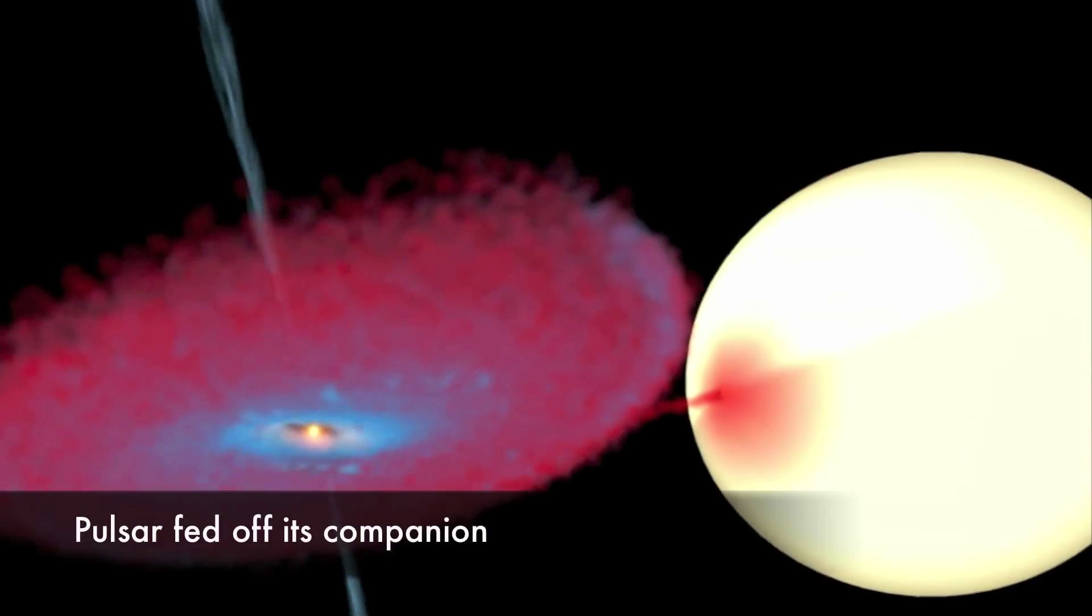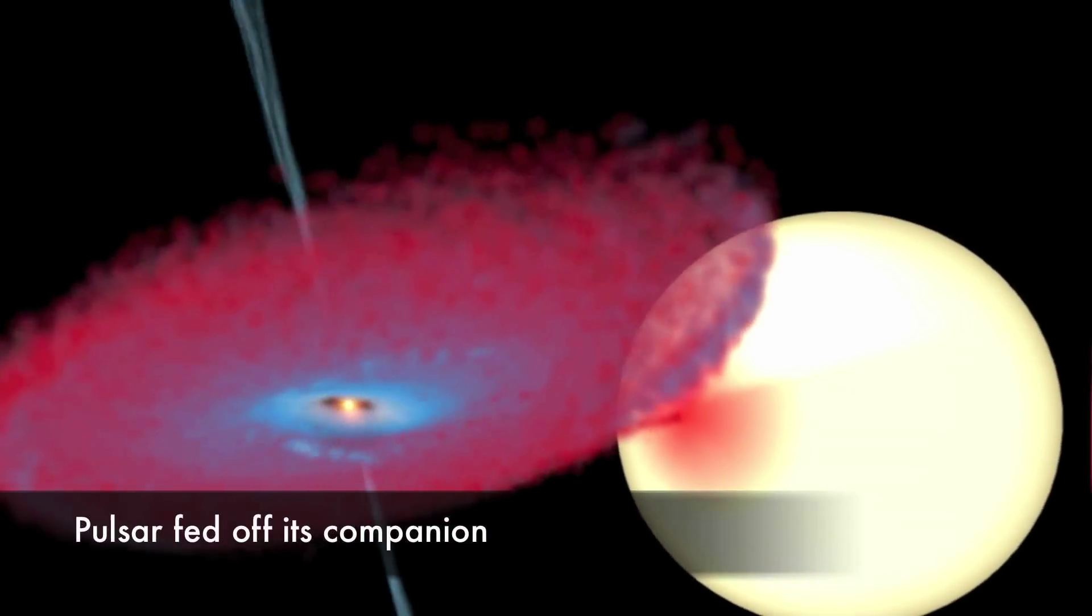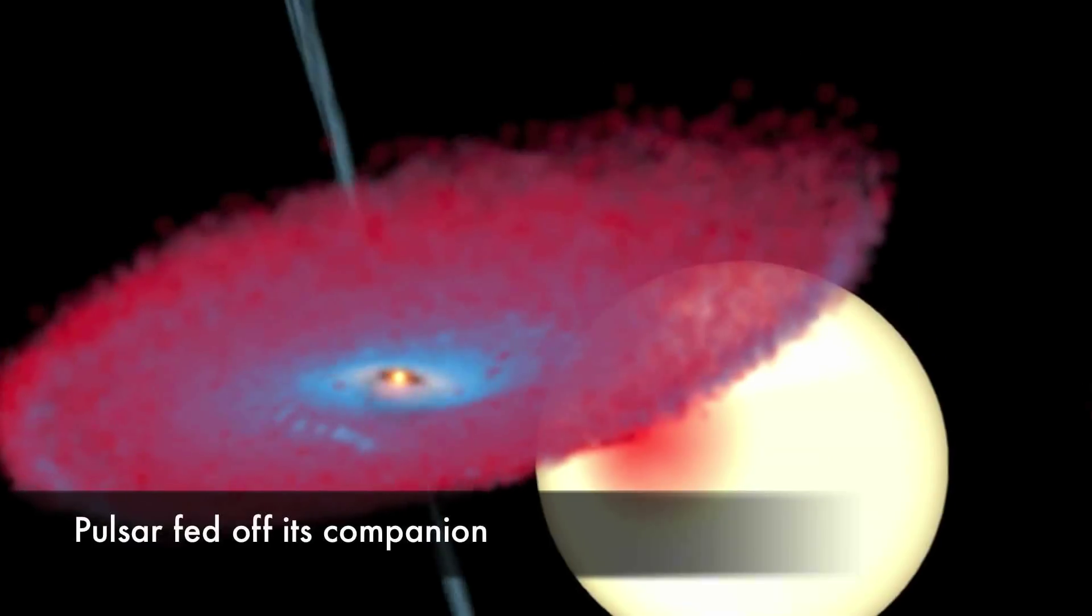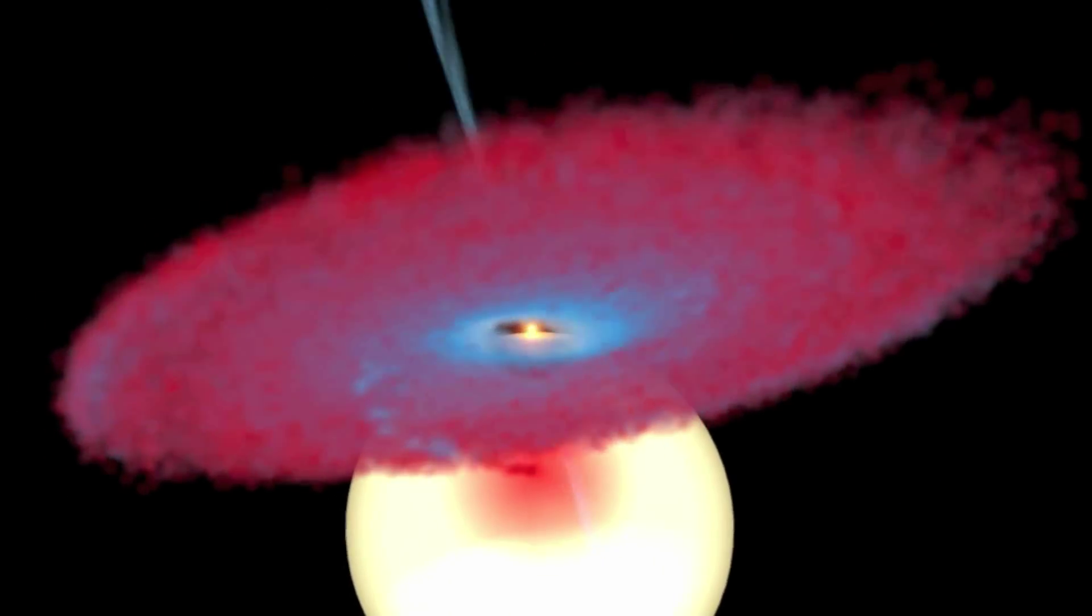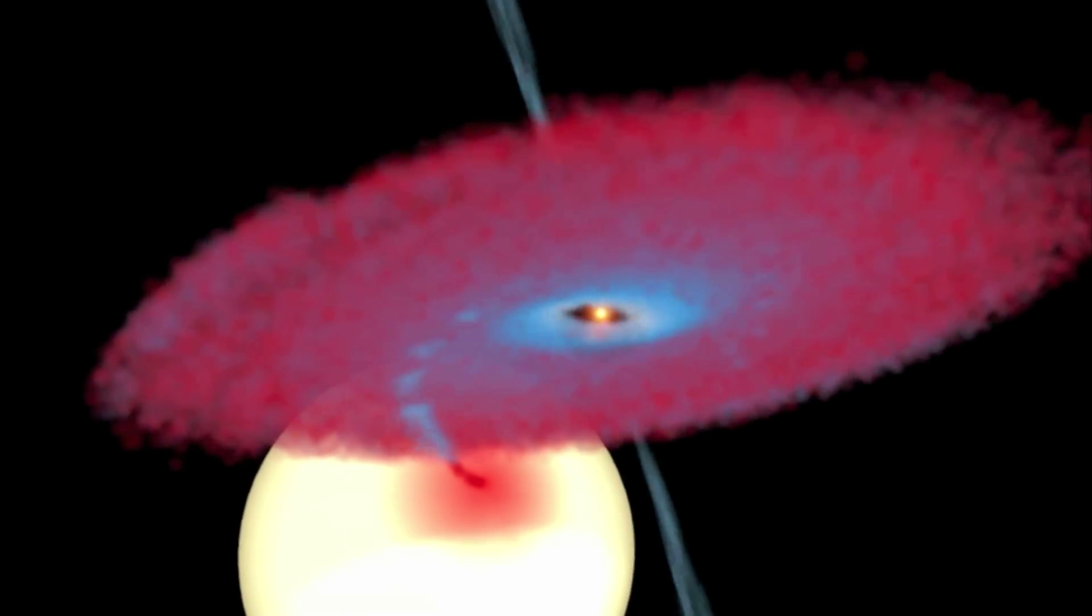The rapid spin of the pulsar tells us that the system once possessed a massive accretion disk as the pulsar stripped matter from its stellar companion. The leftover of this star is what we see today as the planet.